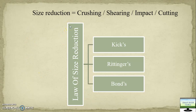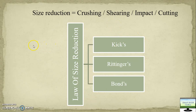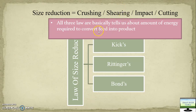There are three most important principles applied in size reduction. Remember them as KRB, where K is Kick, R is Rittinger, and B is Bond. Sometimes they ask which of the following laws is related to size reduction — they are Kick, Rittinger, and Bond. In the upcoming slides I will show you the formula for each and where to apply them. These formulas tell you the amount of energy required as your feed size changes to achieve a particular particle size.